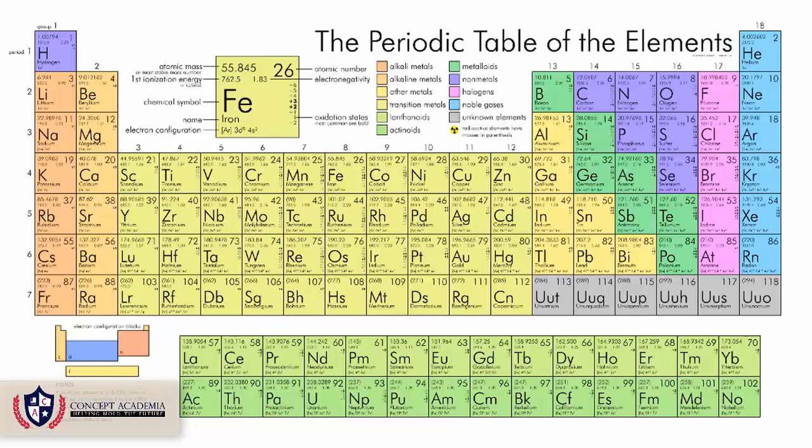From the periodic table we can extract the group number, the period number, the nucleon number, and the proton number. I would suggest that we should consult this periodic table again and again, and try to get as much information from the elements of the periodic table as possible. The more expert you become at extracting information from the periodic table, the better.